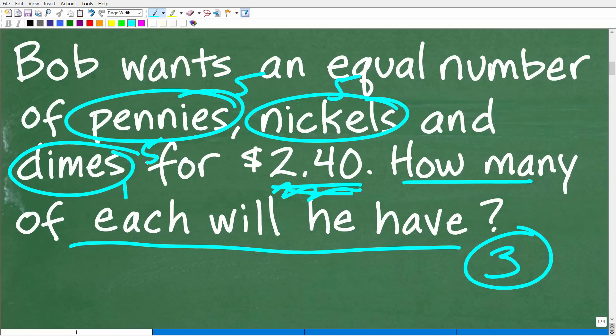You could be like, all right, one dime, one penny, one nickel, is that going to add up to $2.40? No. So we start increasing the amount, maybe we put 10 here, right? And see, oh, we're getting closer to $2.40. So again, this is why I wanted to say that you could figure this problem out in different ways, especially if you have a calculator.